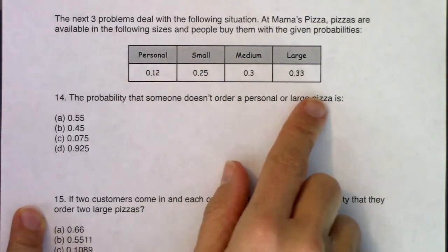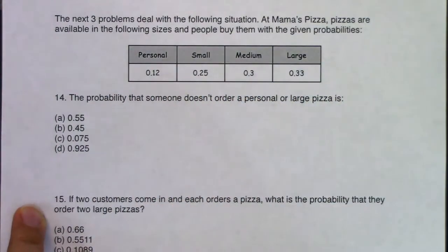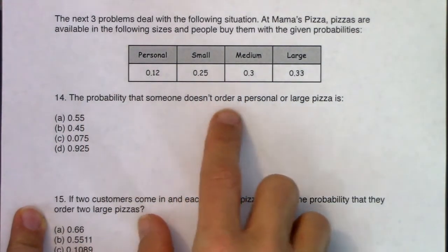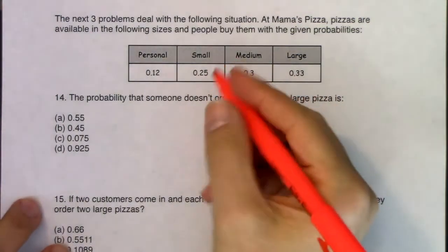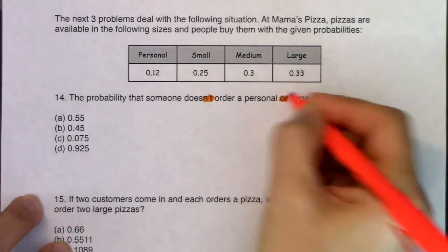If I take a look at this, I can get a personal, small, medium, or large, and these probabilities should total out to one because that's our sample space. The question is: What is the probability that someone does not order a personal or large? So even though it's in conjunctive form, I see the NOT and I see an OR.